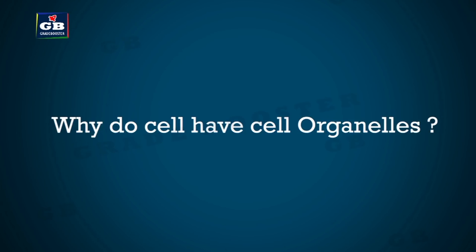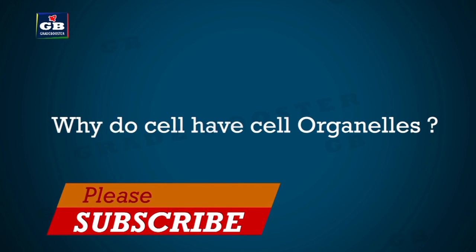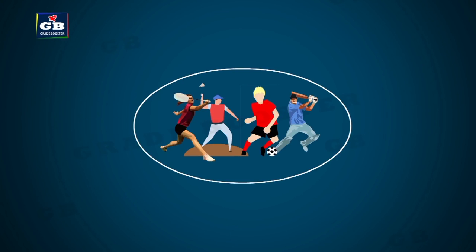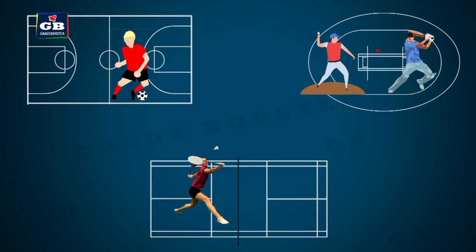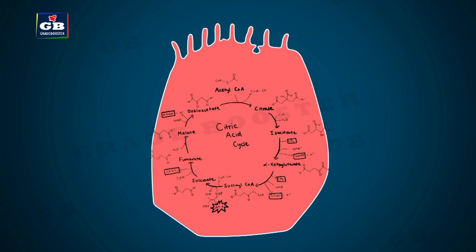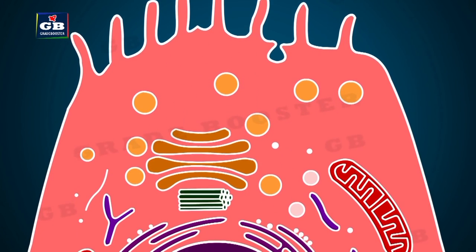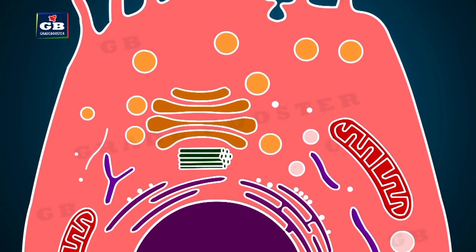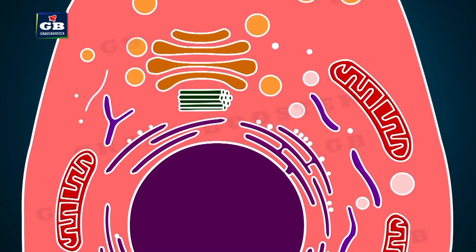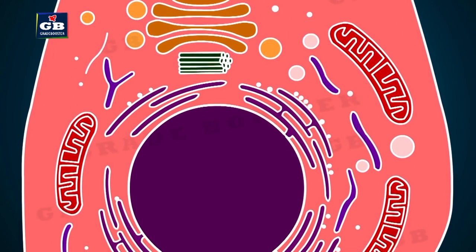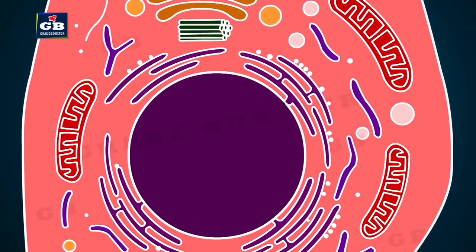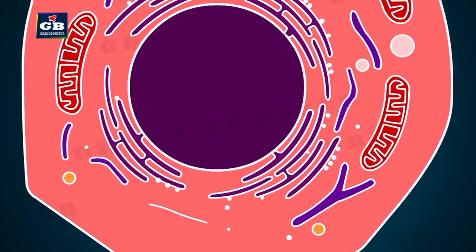Why do cells have cell organelles? We cannot play cricket, football, basketball, and tennis all together in the same court — different courts are required for different games. Similarly, in a cell, many chemical activities take place, and different chemical activities require different conditions and machinery. Not all reactions can take place in the cytoplasm, so they need separate organelles to keep these activities separate from each other. Cells use membrane-bound organelles called cell organelles for this purpose.